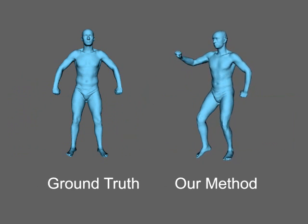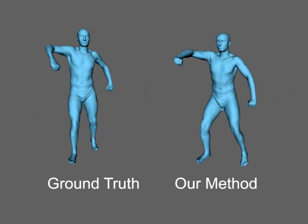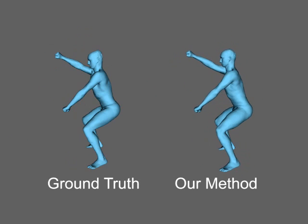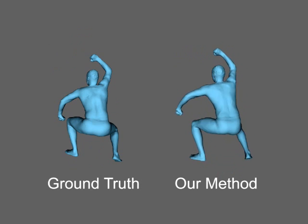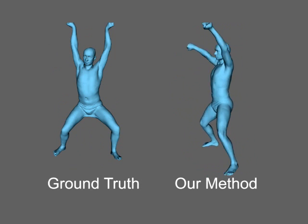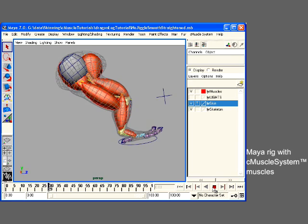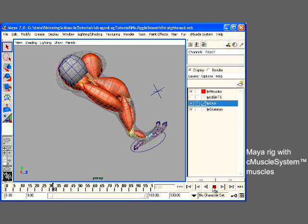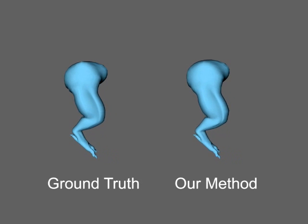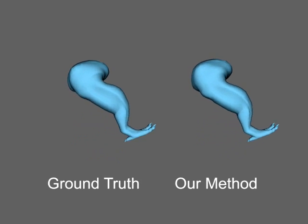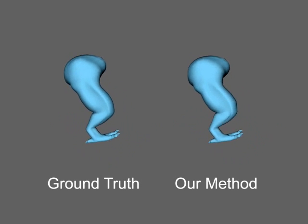Our model can accurately approximate the deformations from human scan data. Here we demonstrate our technique blending between human scan poses. Our model can express large muscle bulges as well, such as at the knee of this leg, and roughly approximates skin sliding over bone.